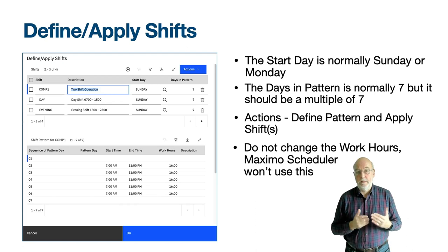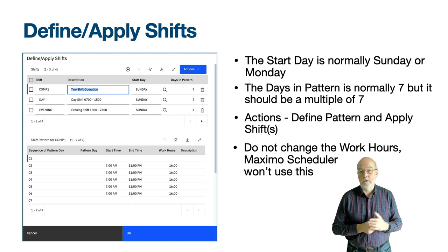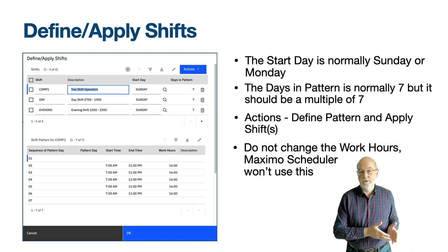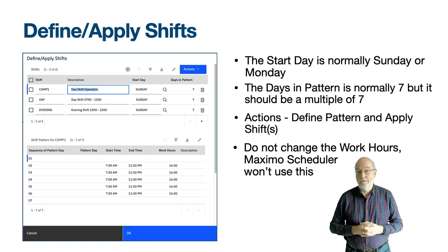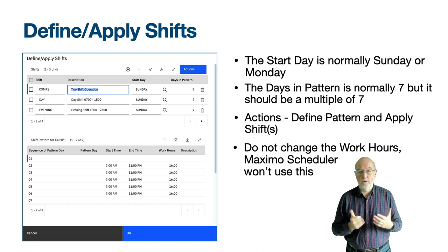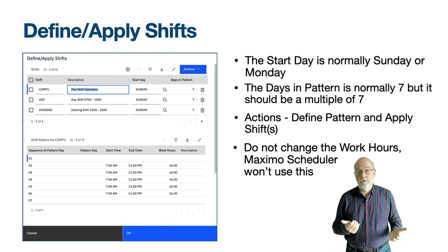If you scroll down in the dialog you would come across another table window to create breaks in the work shifts. This can only be done for the days in the pattern which have work hours. For example, if your work day was 08:00 to 17:00, which is 9 hours, then you could add a break between 12:00 and 13:00 for 1 hour. This does not reduce the work hours — they are still 9 hours. However, it will visually show in the graphical assignment application so that you can schedule a gap in the work orders around the time when the labour or crew would be expected to take a break. Breaks are not used elsewhere in Maximo, so I wouldn't define them unless you were imminently going to use them. You can define multiple breaks in a work day.